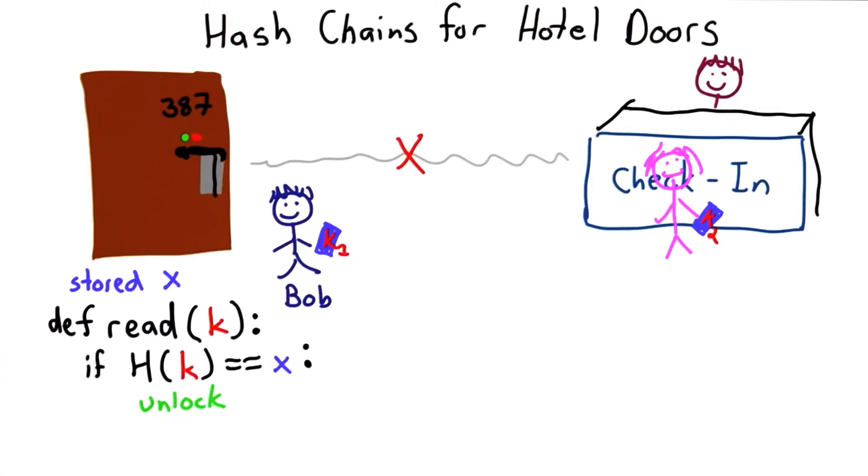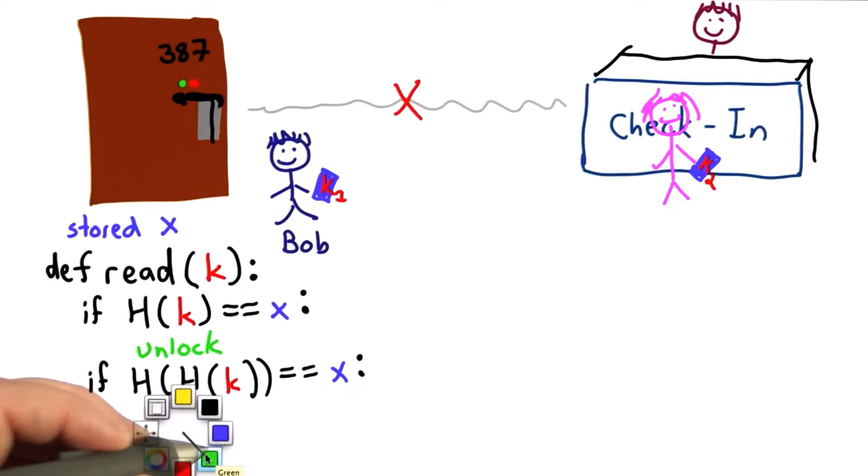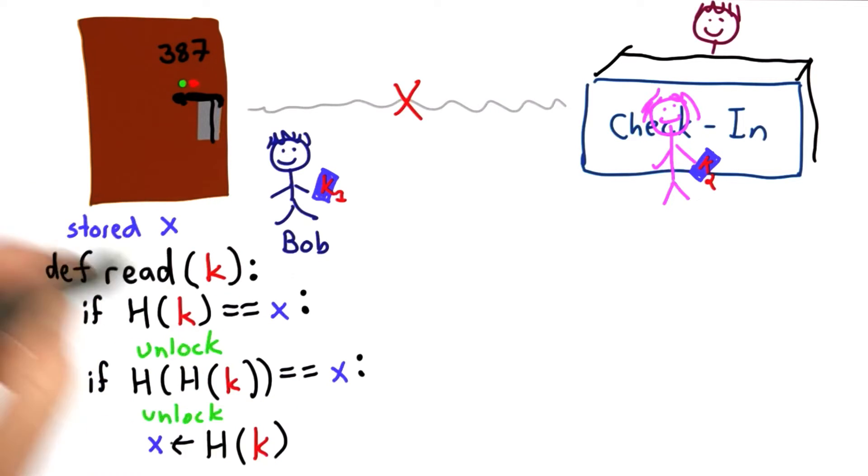We open the door with the correct key. There's another situation that we need to test for, and that's if the hash of the hash of the key is equal to x. If the hash of the hash of the key, if we're thinking about a hash chain, well, that would be the next key in the hash chain. If that's the case, we also want to unlock the door, but we want to update the value that's stored as x. We'll update that value to be the hash of the current key, hash of k. So that's our read protocol.